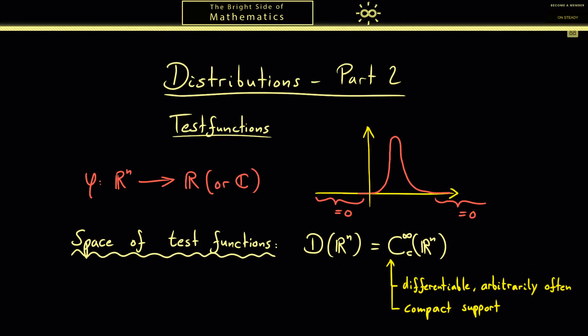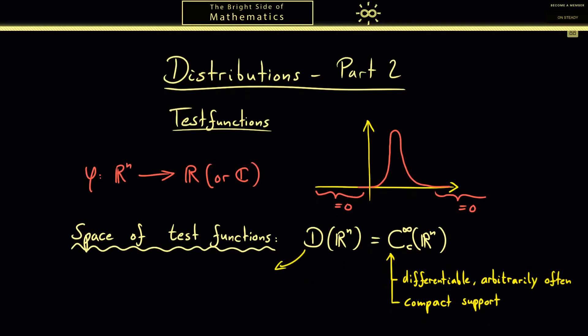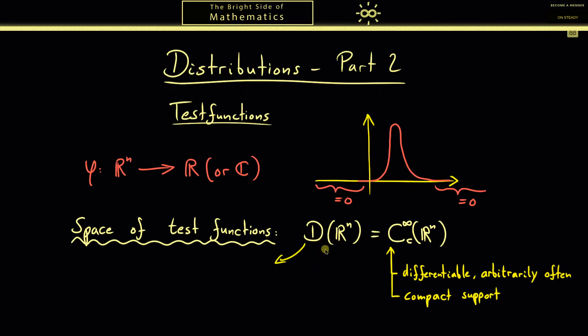Now we know what the set D is, but of course we have a little bit more structure here. The first thing you should notice with your analysis and linear algebra knowledge is that we have a vector space structure. It could be a real or a complex vector space depending which values we allow. In particular this means, if you choose two functions out of our space, then the sum is still differentiable, arbitrarily often, and it vanishes outside of a bounded set.